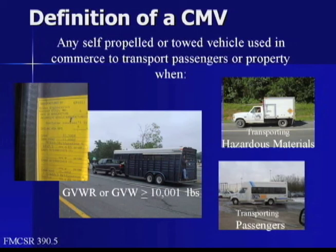Definition of a commercial motor vehicle: any self-propelled or towed vehicle used in commerce to transport passengers or property when it has a gross vehicle weight rating or gross vehicle weight of 10,001 pounds or more, or when transporting hazardous materials or passengers.